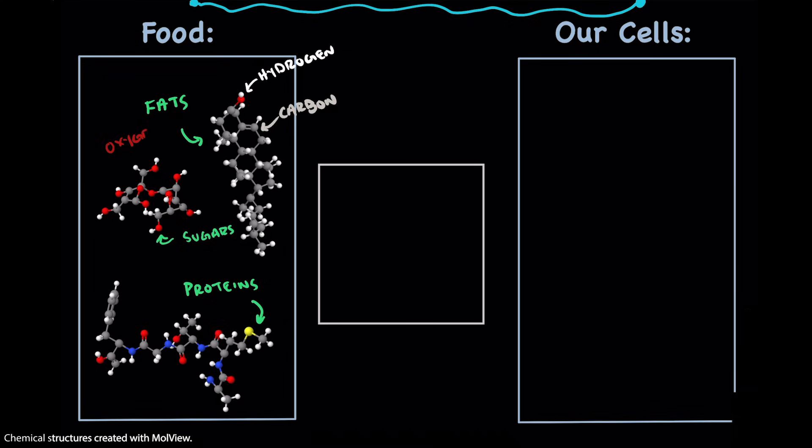But we've also got oxygen here in red, and nitrogen in blue. Those are the other two big ones. And every now and then, we'll also find small amounts of some other elements like this sulfur here in yellow.